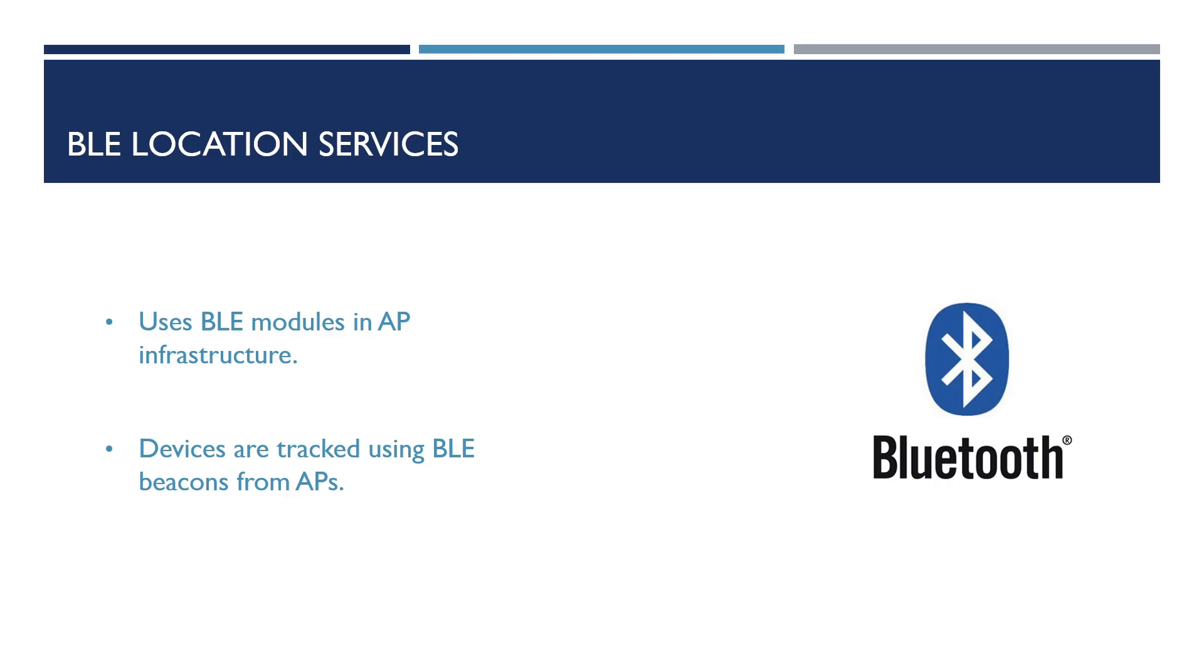So BLE tracking is done via BLE modules. These can be separate from our APs. However, you'll find in most modern Cisco access points that come installed with a BLE module that can be enabled if required. Devices are then tracked via the BLE beacons from the devices. The location tracking is completed similarly to methods explained within the video.